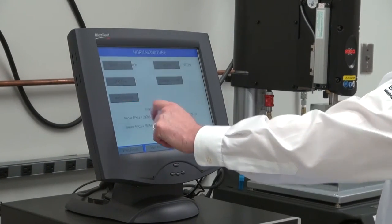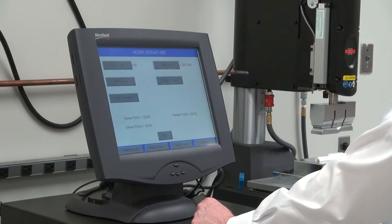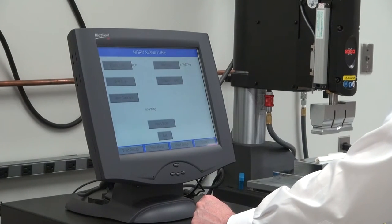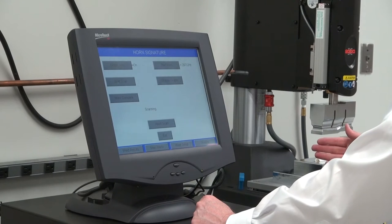This is part of the horn signature feature. From the horn signature page, I can do a start scan, and now it's scanning frequencies from 29 kilohertz to 31 kilohertz.